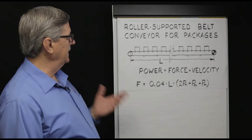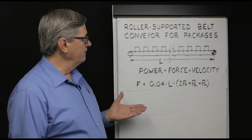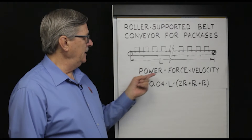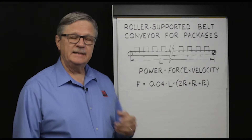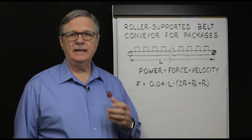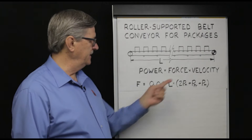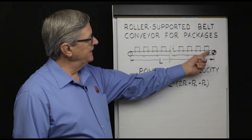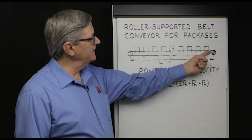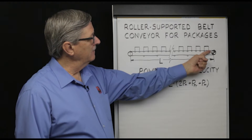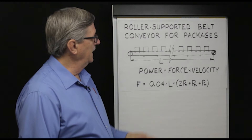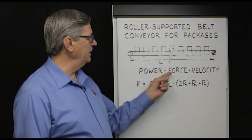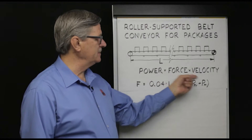How do we calculate required power and required belt pull? We know that power equals force times velocity. In conveyor belt terminology, it is convenient to think of force as belt pull, which is the tension at the immediate vicinity of the drive pulley, and velocity as belt speed. So required power equals belt pull times belt speed.